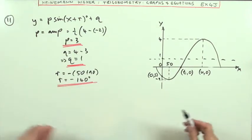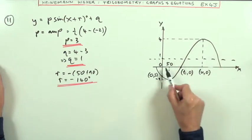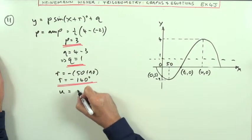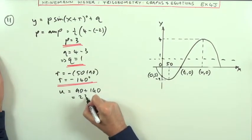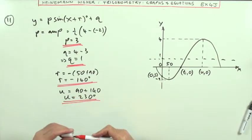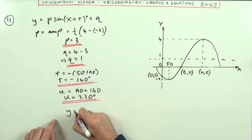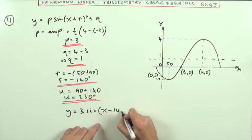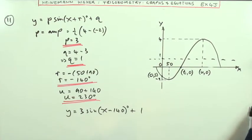The whole thing's been shifted forward 140, which means the top of it, which should have been at 90. So this is U. The top should have been at 90, so it's now going to be 90 plus 140, which is 230 degrees. There's the four parts to the first one. Putting it all together, I've got Y equals 3 sine X minus 140 degrees plus 1 for the equation of that.